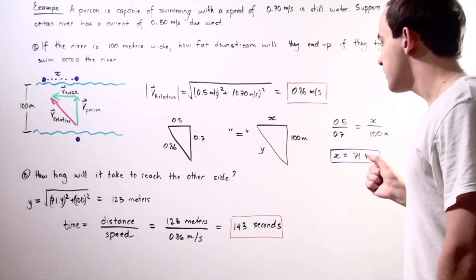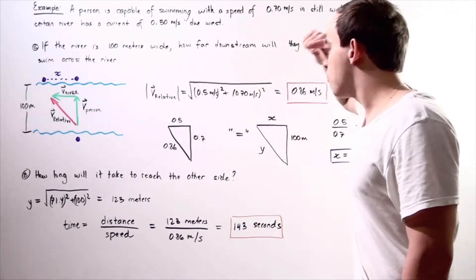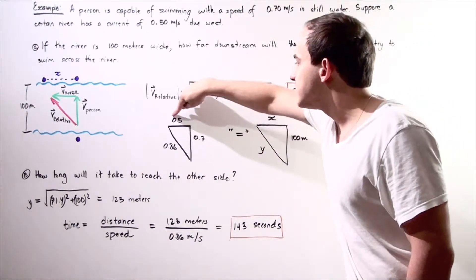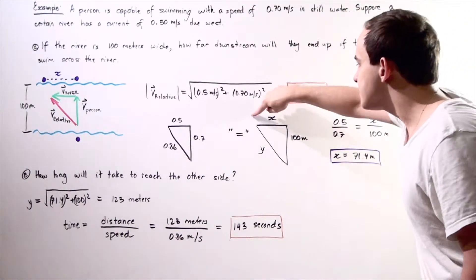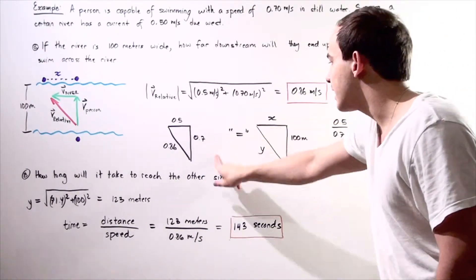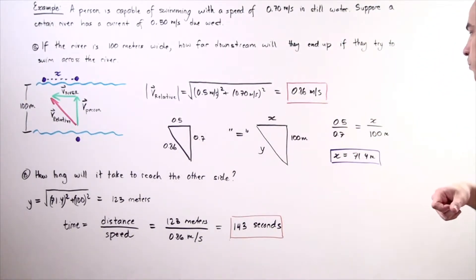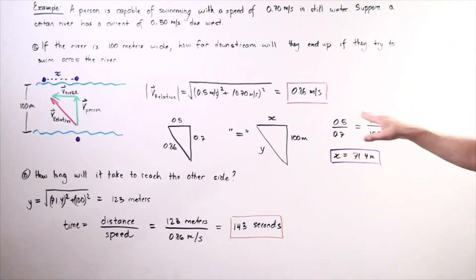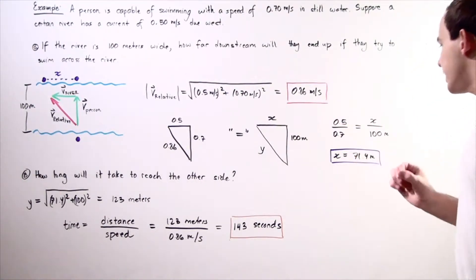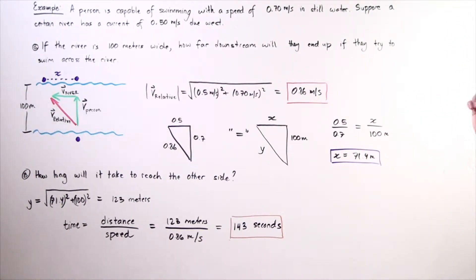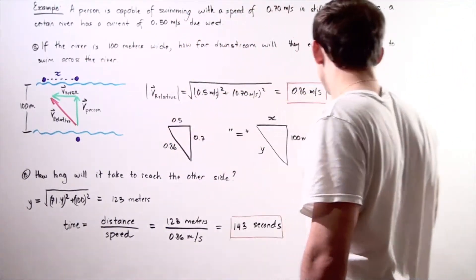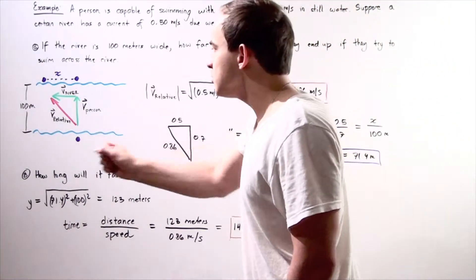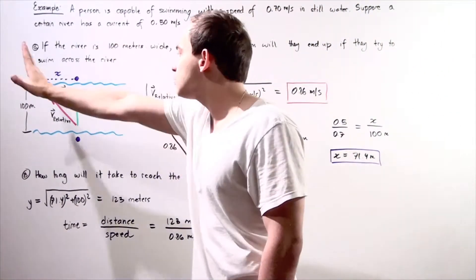We simply set up a proportion. We want to set up a proportion between this side and this side. So, 0.5 divided by 0.7 is equal to X divided by 100. I find this value, multiply both sides by 100, and I get X to be approximately 71.4 meters. That means the person will end up 71.4 meters from the position where they actually want to end up, downstream.